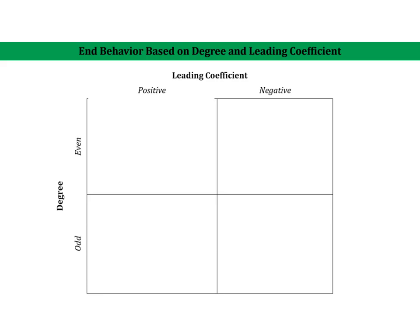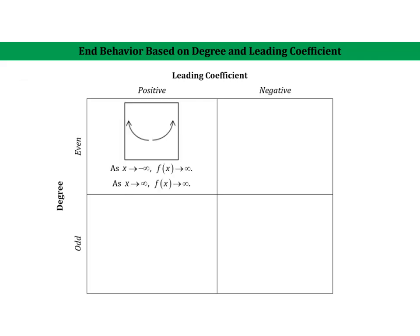If we think about a power function like y equals x squared, that's probably the easiest polynomial to think about. y equals x squared has an even degree because of the two, and the leading coefficient is one, which is positive. That means our end behavior would look like it's going up on both ends. Likewise, an even degree with a negative leading coefficient — something like y equals negative x squared — would go down on both ends.